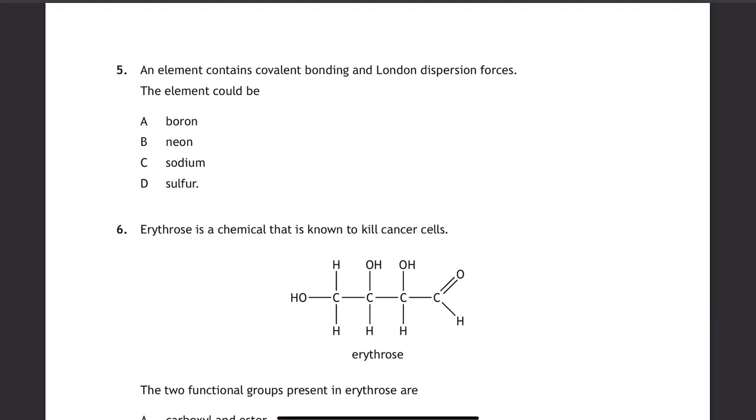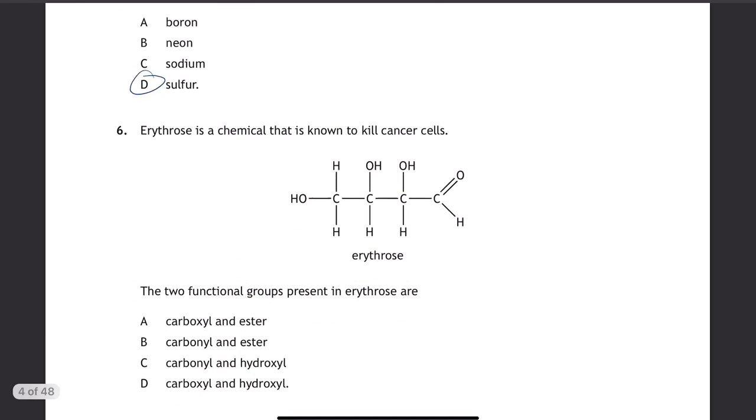The element that contains covalent bonding and London dispersion forces. If it's got any van der Waals forces between it, it needs to be a covalent molecule. The covalent molecular element here would be sulfur. Neon does have LDFs, but it's monatomic. Boron's a covalent network and sodium is a metallic lattice.